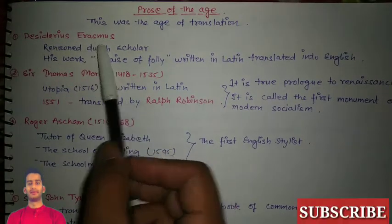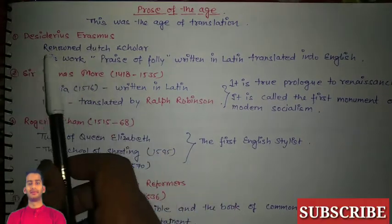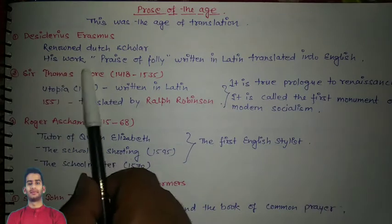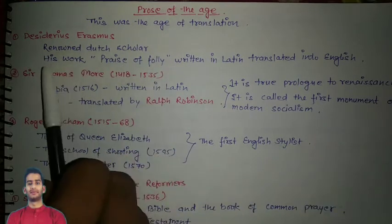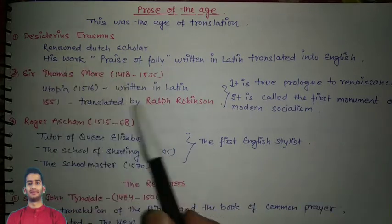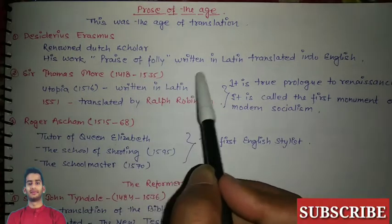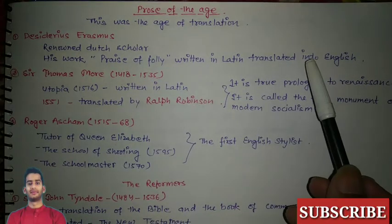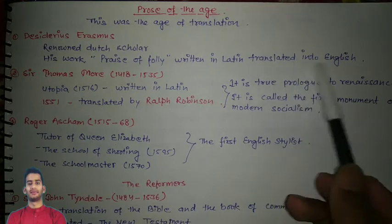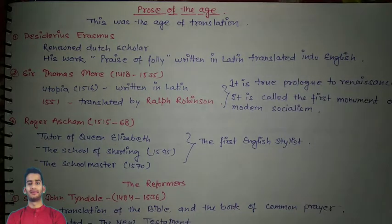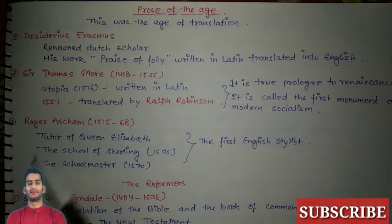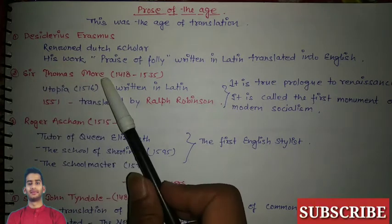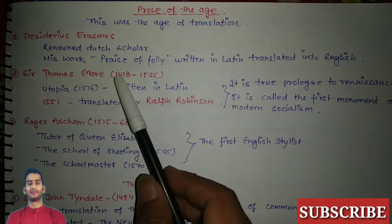The first is Desiderius Erasmus, a renowned Dutch scholar. His famous work is 'Praise of Folly,' written in Latin and later translated into English.